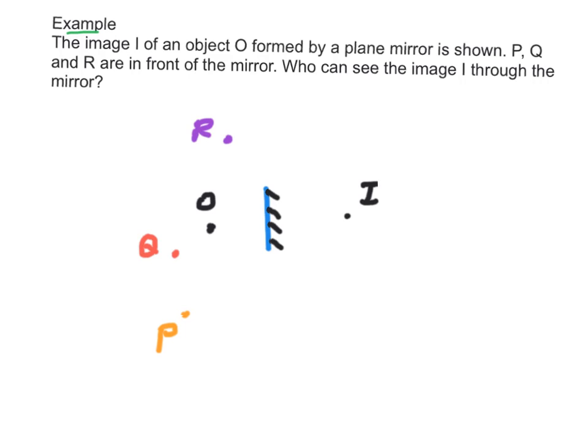For example, the image of an object O formed by a plane mirror is shown in the diagram. P, Q and R are three men in front of the mirror. Who can see the image I through the mirror? First, the line joining Q and I intersects the mirror. Therefore, the image I can be seen by Q by reflection of light by the mirror.